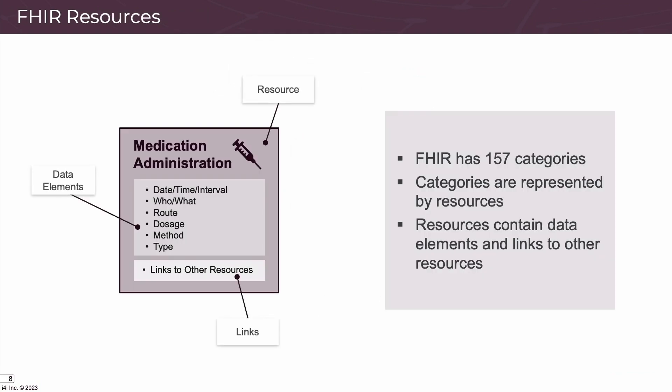There are over 157 categories of FHIR data, and each of these are represented by resources. Remember that the R in FHIR stands for resource. Each resource contains data elements specific to its purpose, and resources can link to other resources. For example, the resource that describes the administration of a medication only contains information such as the specific date and time the administration took place, who or what performed the administration, the route the medication was administered through, and the dose that was administered.